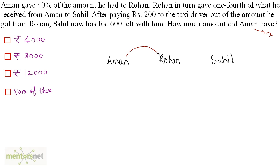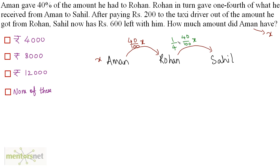Aman gave Rohan 40% of X, so 40/100 × X rupees were given to Rohan. Rohan in turn gave 1/4 of what he received from Aman to Sahil. The amount Rohan received was 40/100 × X, so 1/4 of that is given to Sahil: (1/4) × (40X/100).